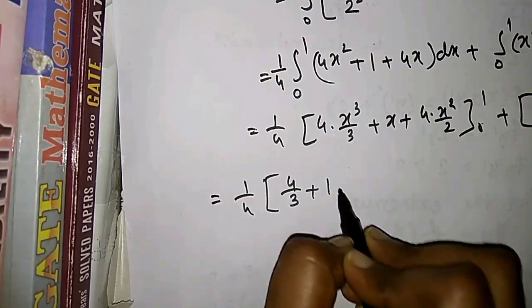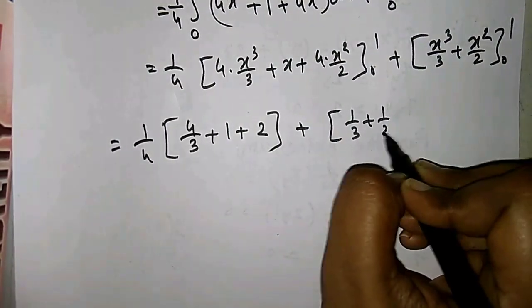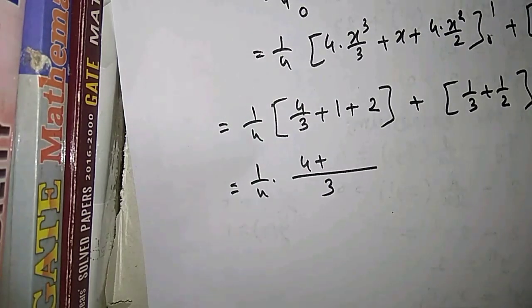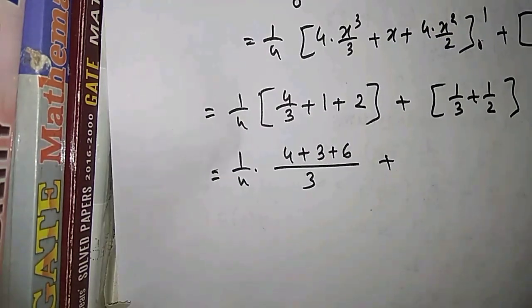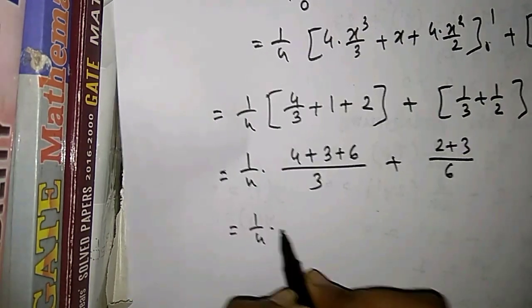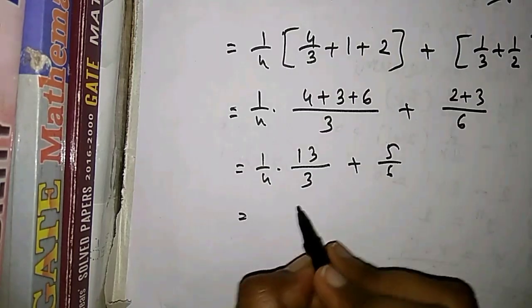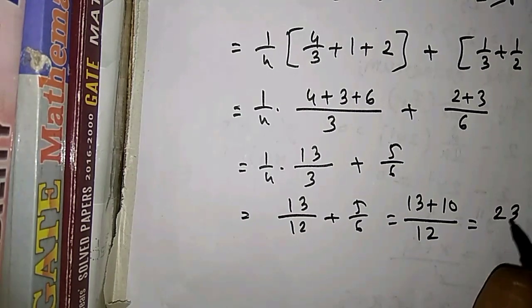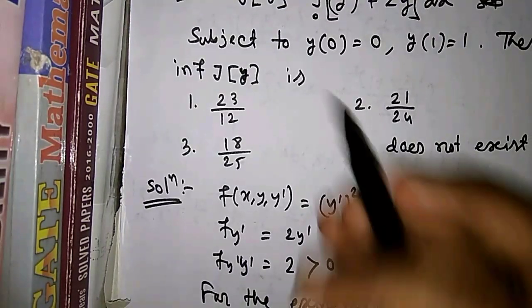Evaluating at x = 1: 1/4 · (4/3 + 2 + 1) plus (1/3 + 1/2). This gives 1/4 · (4/3 + 3) plus 5/6, which equals 13/12 + 10/12 = 23/12. So the answer is 23/12, and option one is correct.